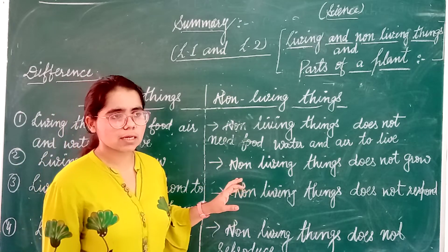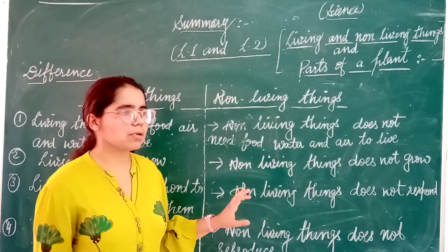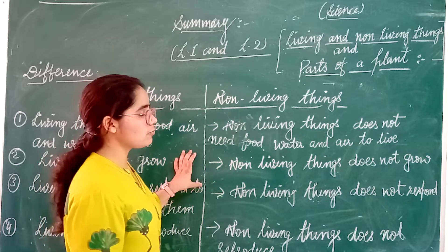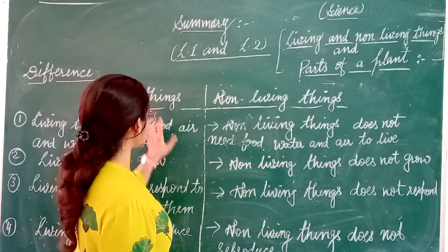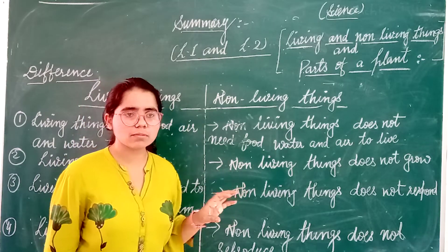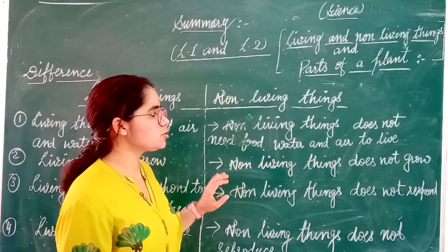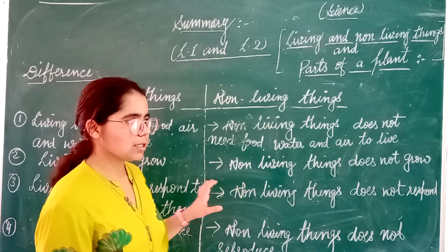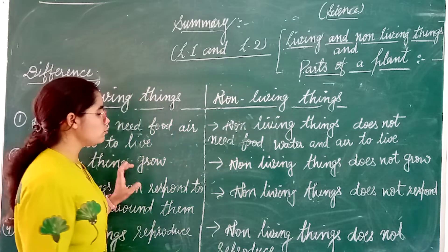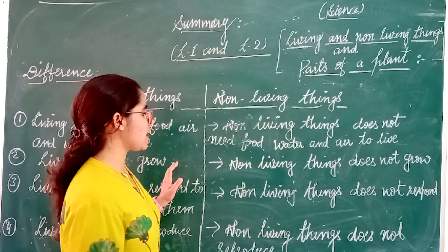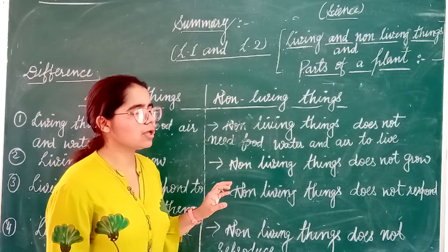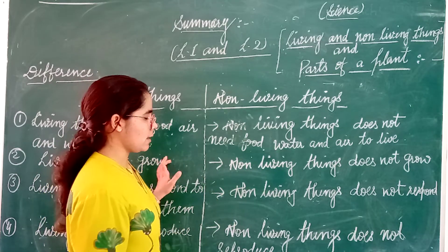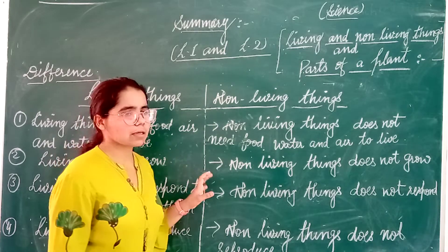For breathing, we all use the lungs. Lungs are the breathing organ of human beings. Similarly, plants also have a breathing organ — in plants there are tiny pores called stomata. Stomata is the breathing organ of the plant. Fish also have gills for breathing. We move using our legs, and most animals also use legs to move. The reasons for movement include searching for food and water, and escaping from other animals.